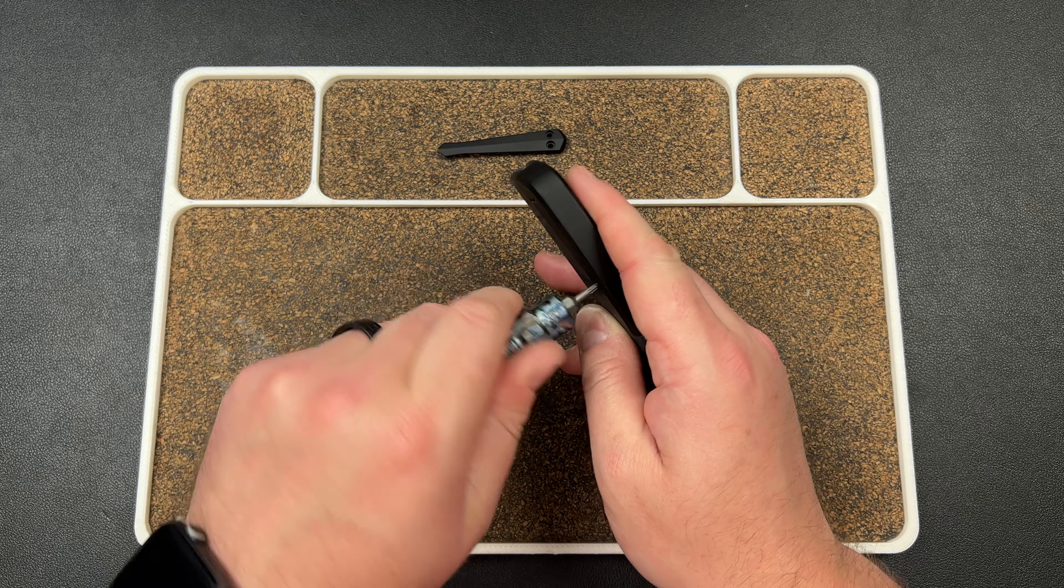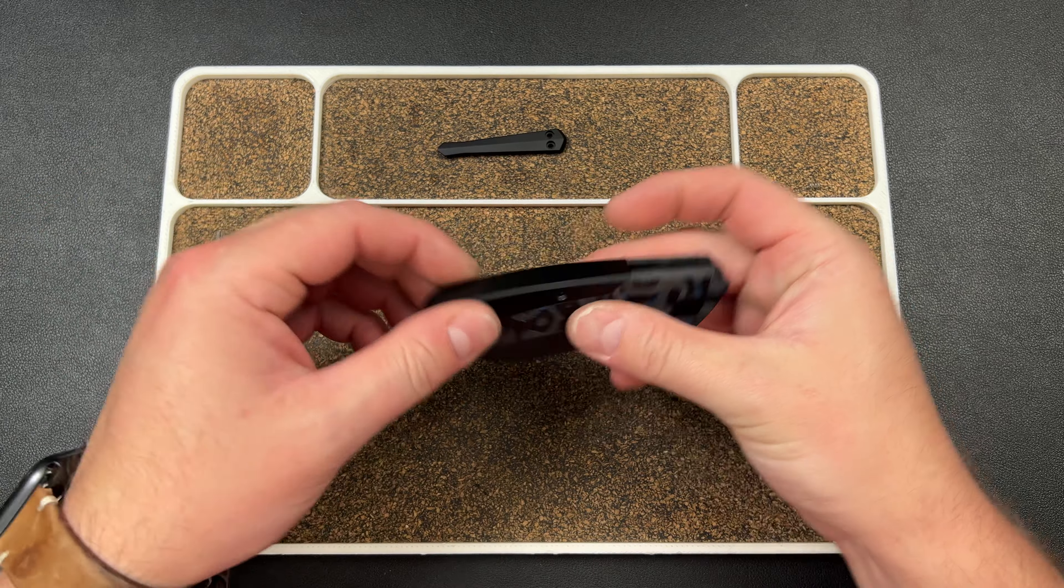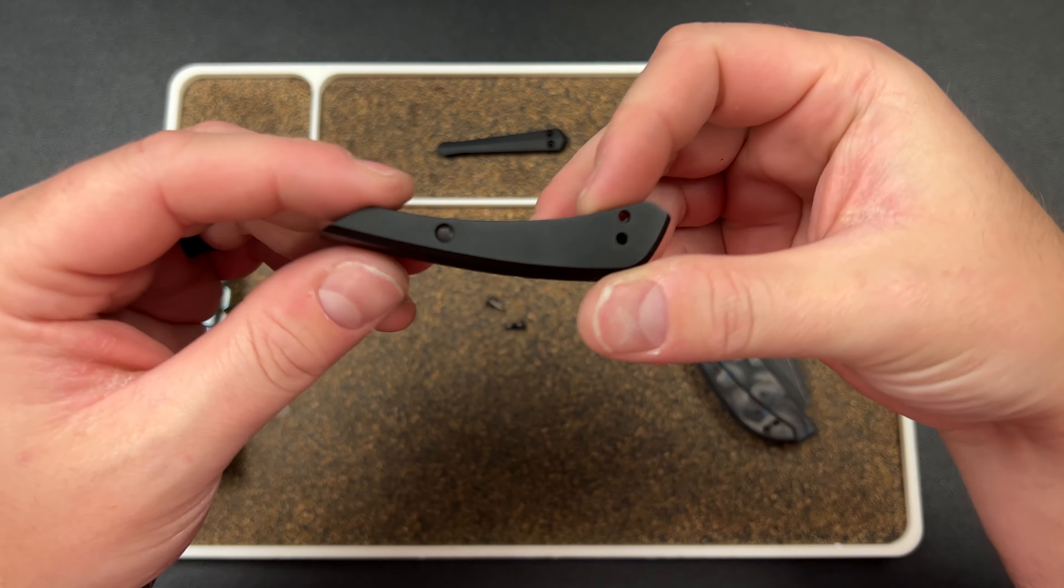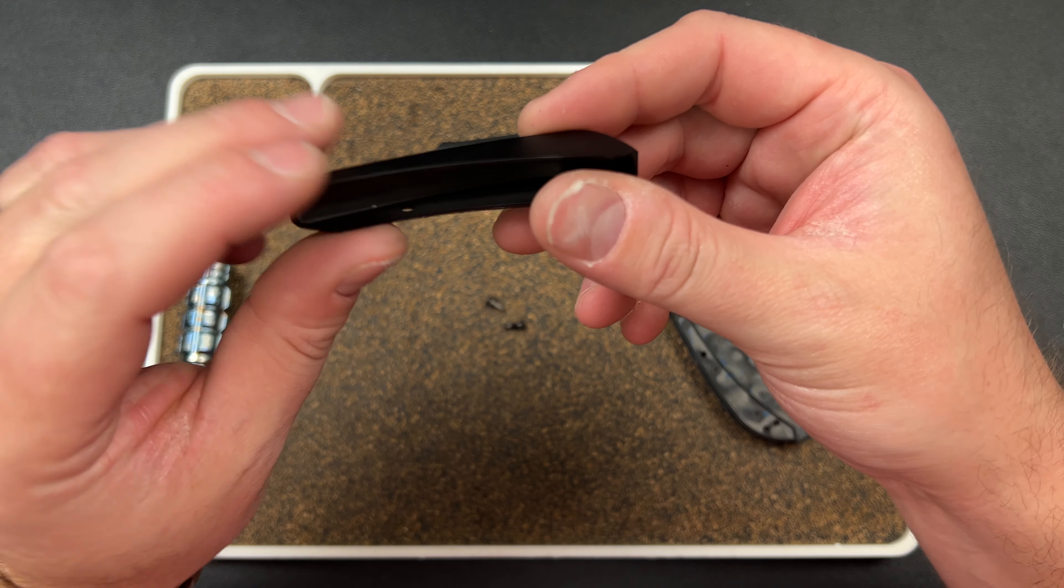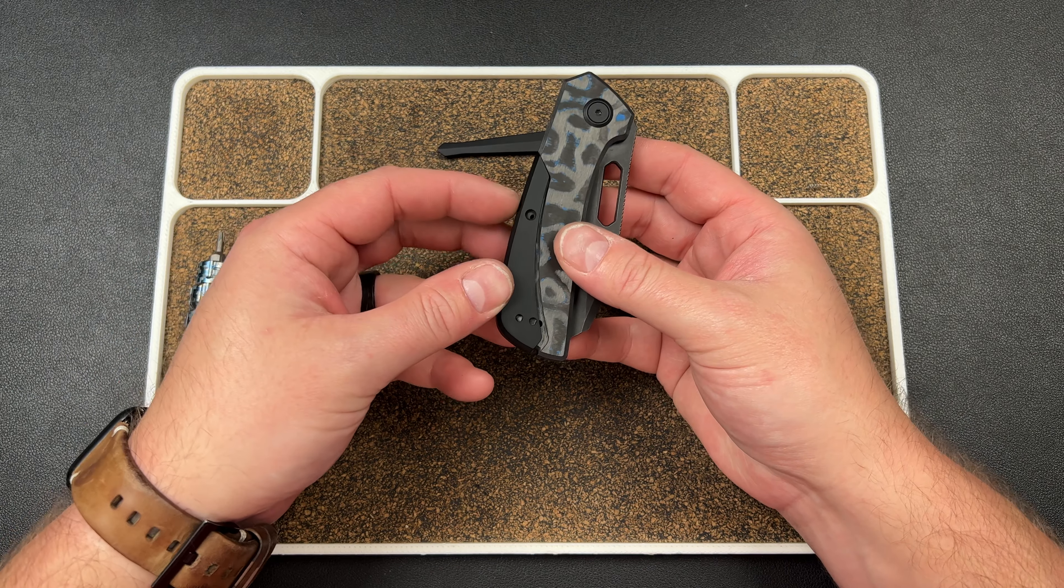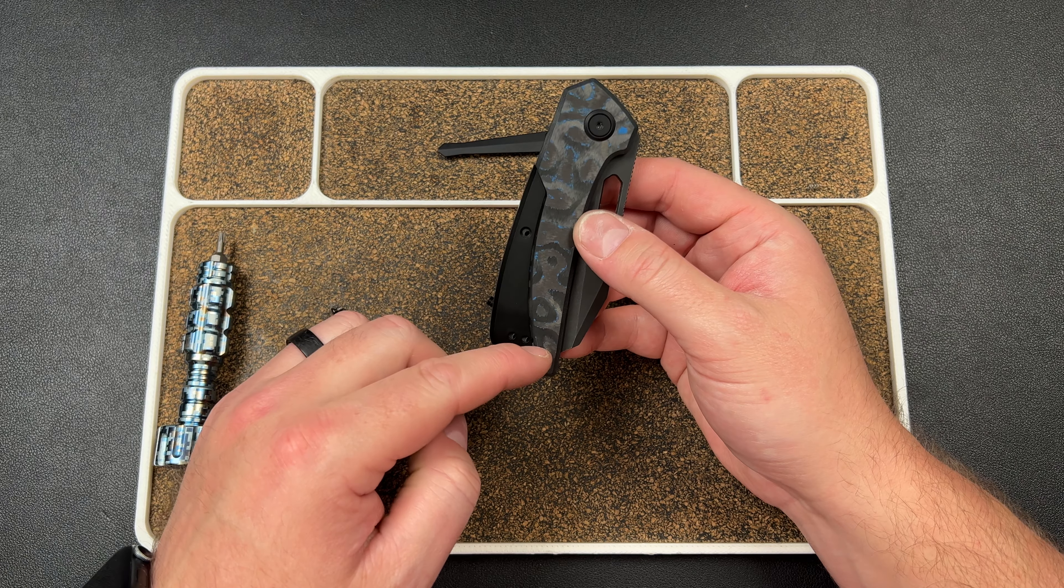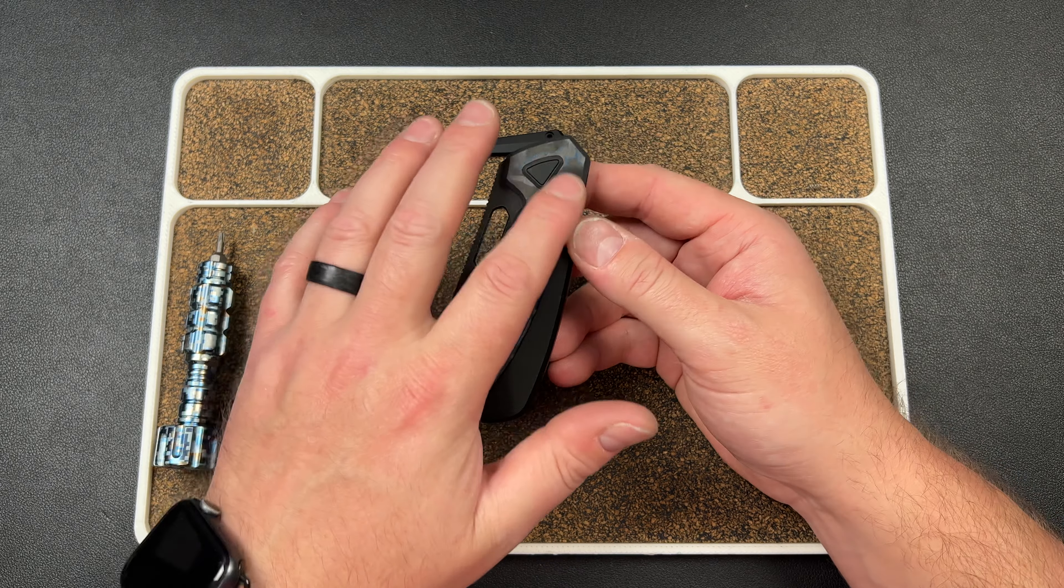Basically what we did was we had them tap the scales underneath for lefty, so it's tapped on both sides. Here's the backspacer, and then you would have a separate backspacer that's left-handed. The lefty ones have the clip screws here and the body screw here, and then this would be blank. So if you flip the clip over, now the clip ends up over here.